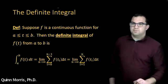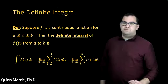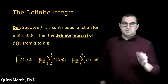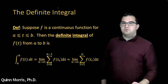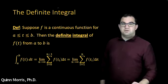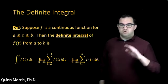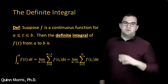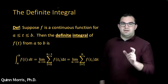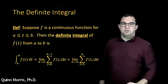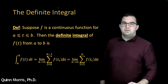So let's start with the definition. You may have seen some of this before, but suppose we take a function f, which is a nice continuous function — so no jumps, no asymptotes, nothing like that — nice and continuous on a closed interval a to b.